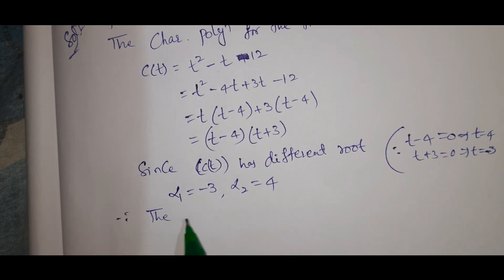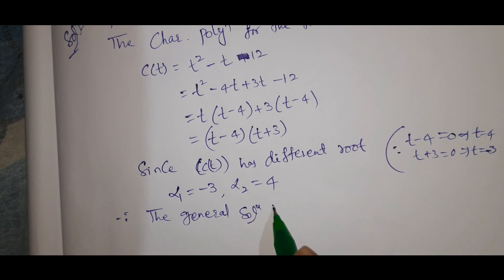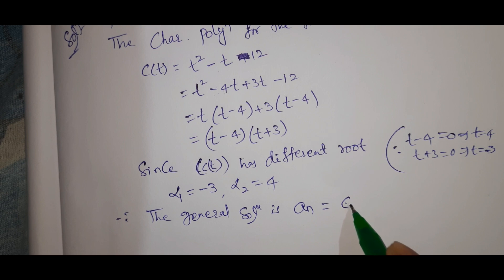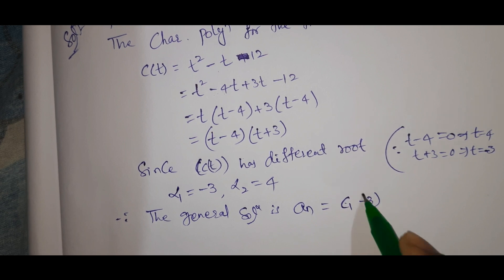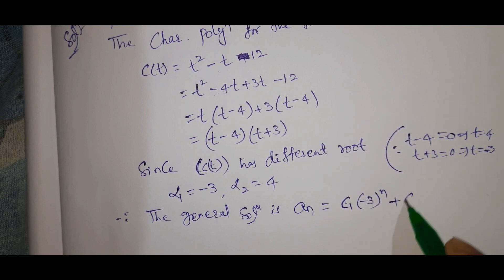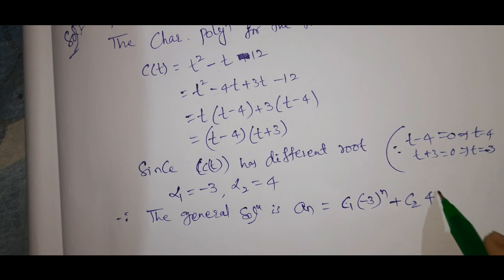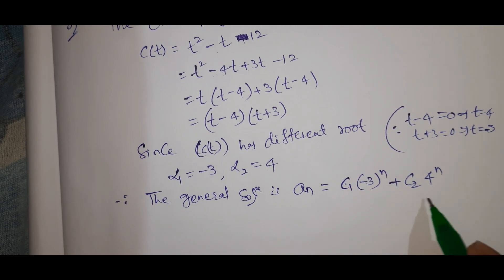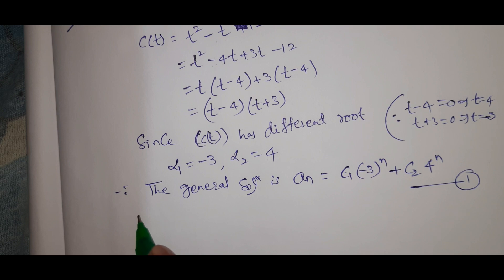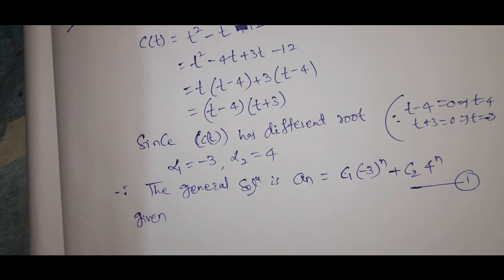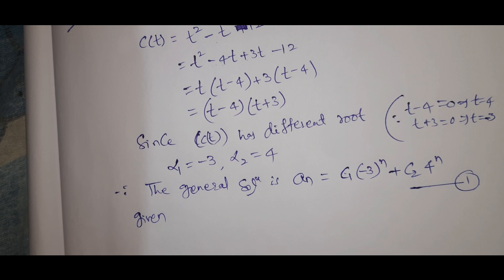Therefore, the general solution is: a_n equal to C1 times (minus 3) to the power of n plus C2 times 4 to the power of n. This is equation number 1. Given: a_0 equal to 0 and a_1 equal to 1.